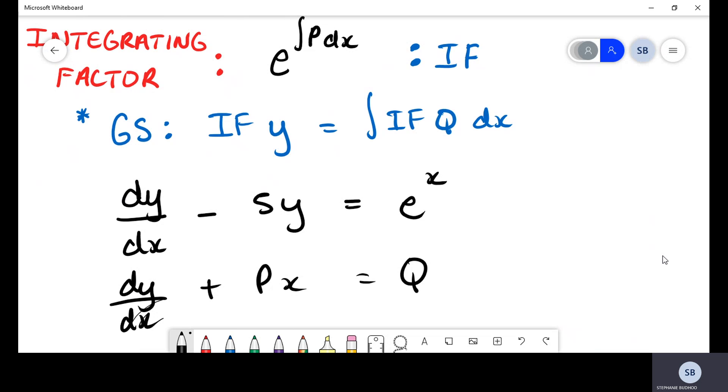Once you have identified the format of your differential equation, the first things you need to do is compare and decide what are your values of P and Q. In our question, we can see that the value of P is -5.